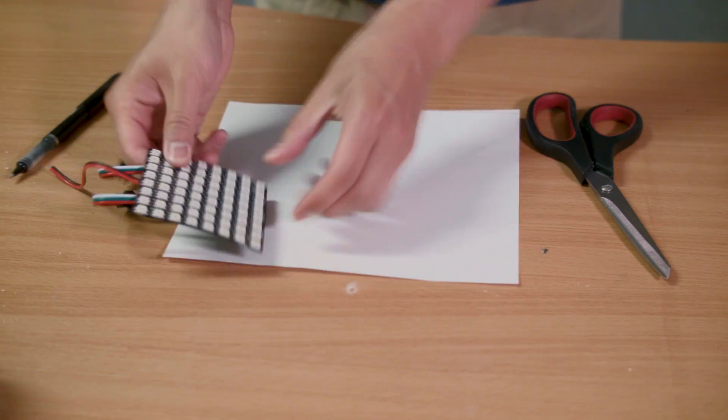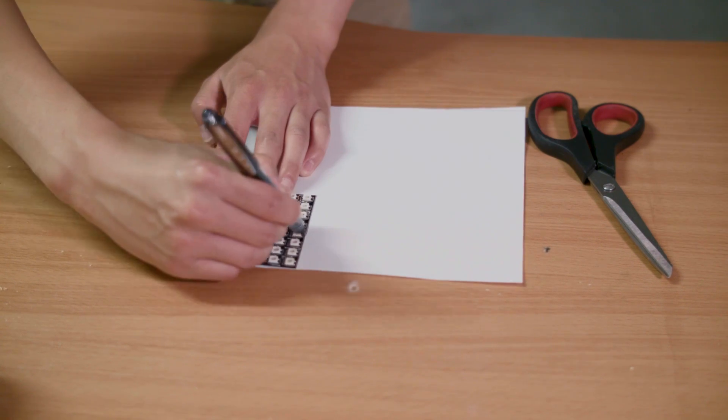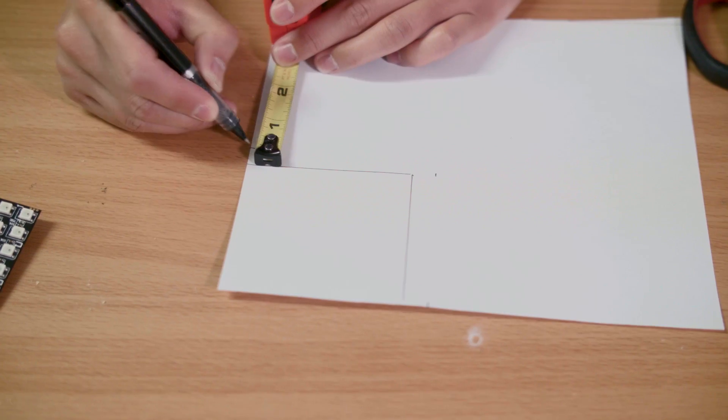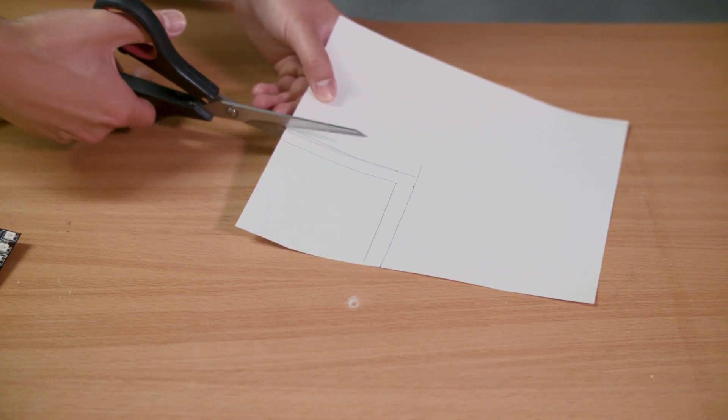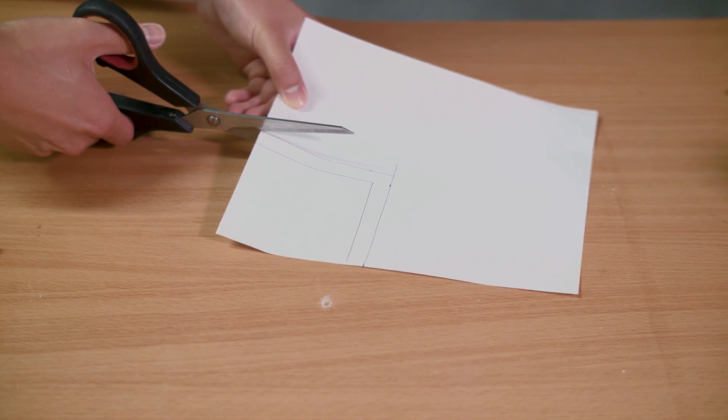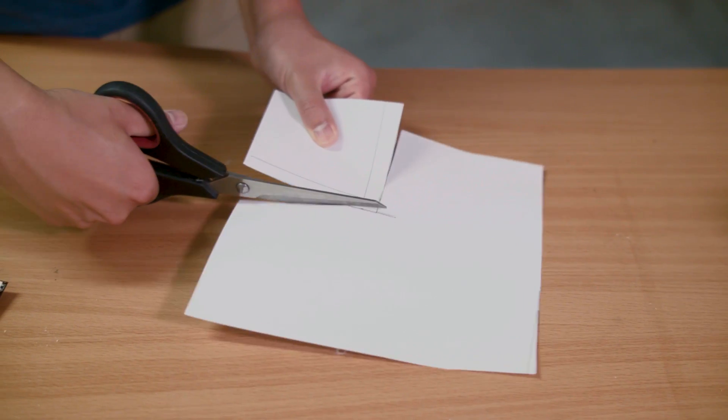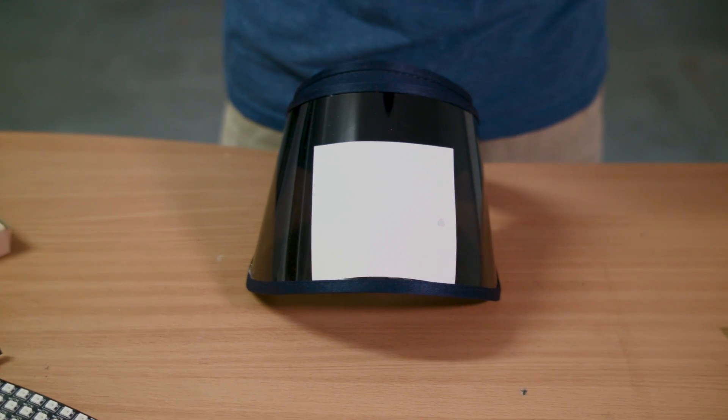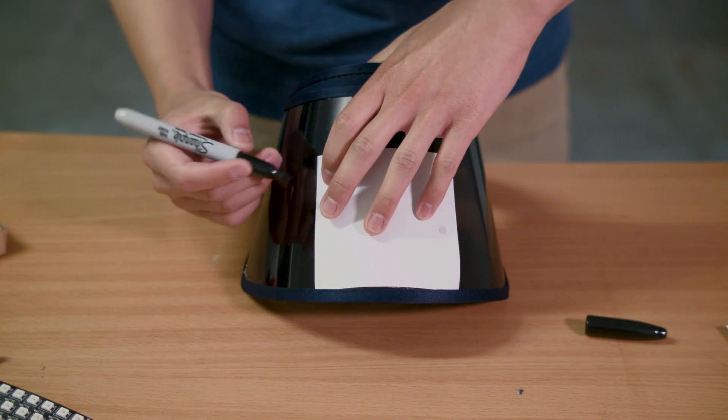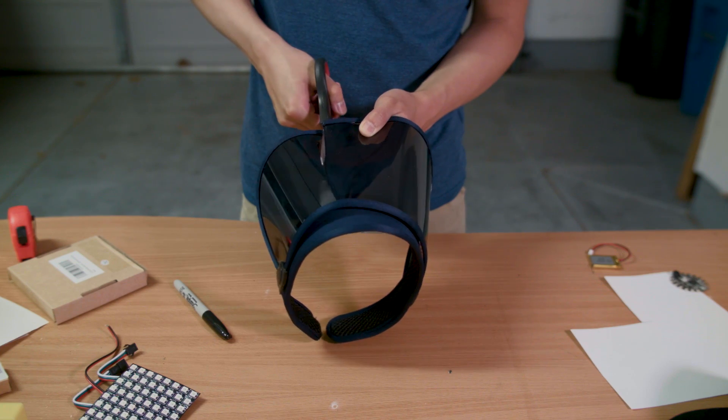To make it easier to size the area to cut out of our hat, we took our LED matrix and traced it on a piece of paper, making it half an inch wider on two sides so we could attach it to the hat. But first, we need to cut out our screen from the sun visor. So we laid our template onto the sun visor, traced it with a sharpie, and cut it out with scissors.